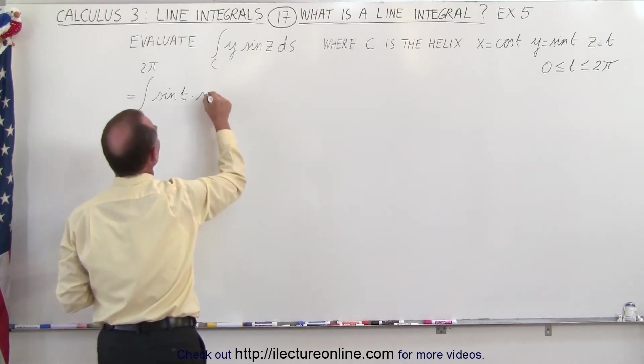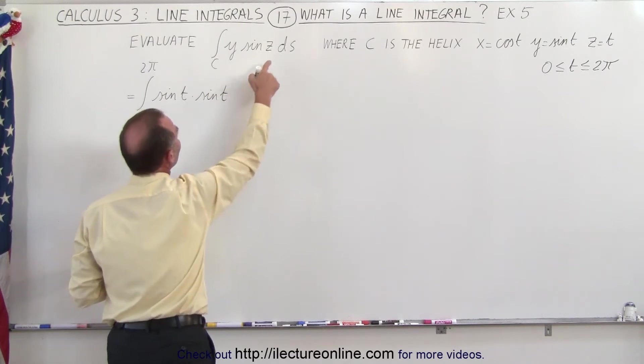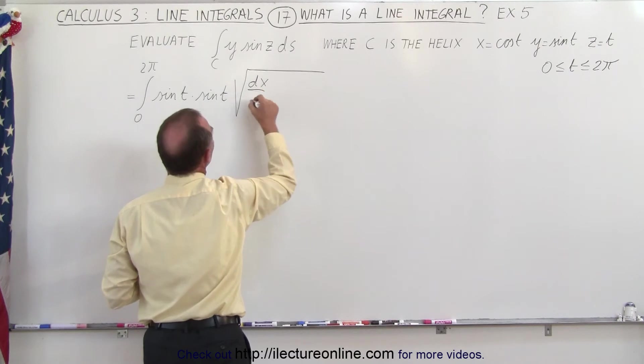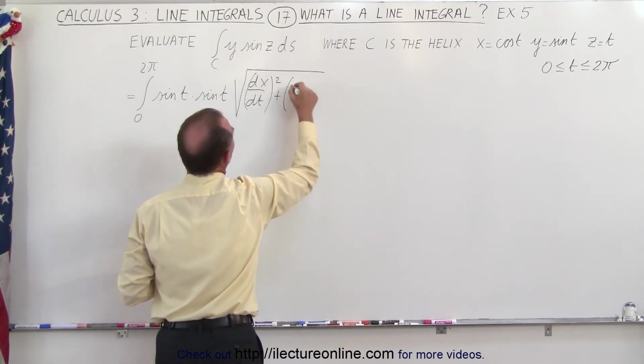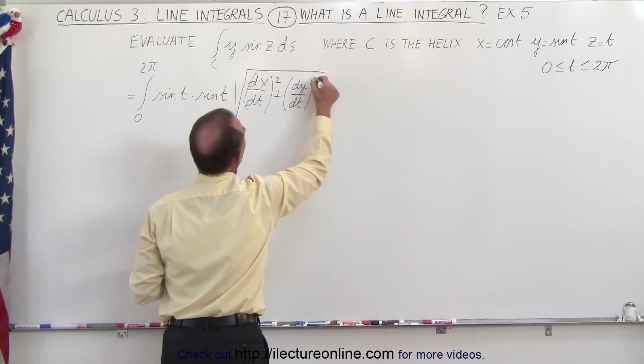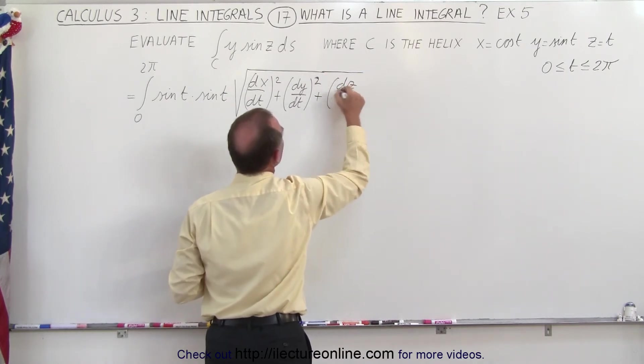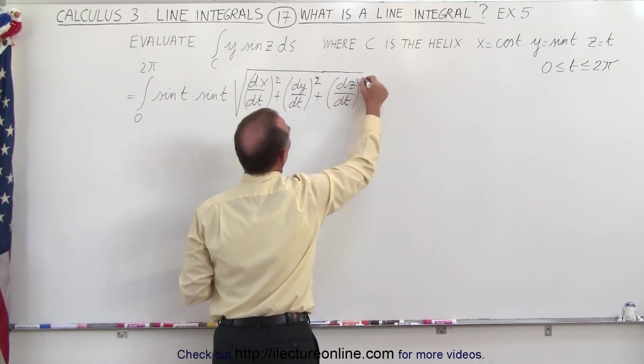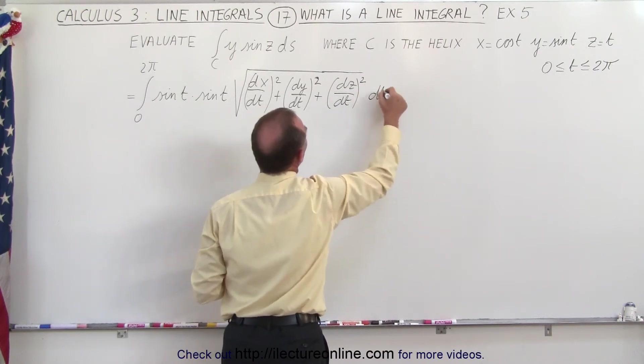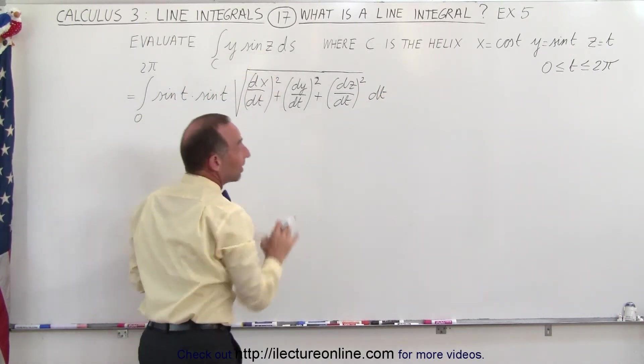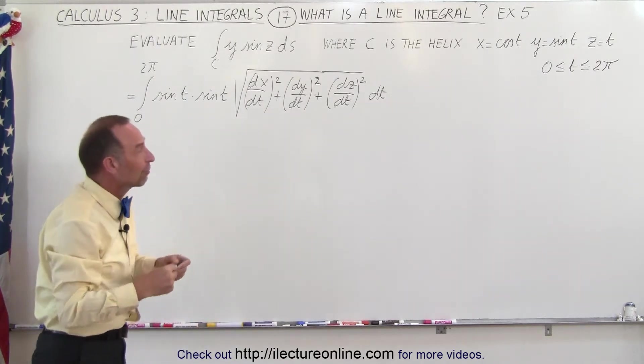So multiply this times the sine of t times ds which is equal to the square root of dx/dt quantity squared plus dy/dt quantity squared plus dz/dt quantity squared times dt. So it's the proper replacement for ds in terms of the parametric variable t.